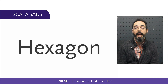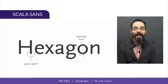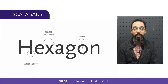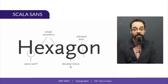Scala Sans falls under a category of type we haven't looked at yet. It's a sans serif, but it has a slightly tilted axis like an old-style serif typeface, and the shapes and proportions of the letters are also reminiscent of an old-style typeface. The bowl of the A and the eye of the E are really small, for instance, and the G has two loops. This style of typeface — sans serif but with many of the qualities of an old-style serif — is called a humanist sans serif.